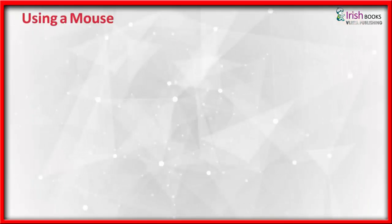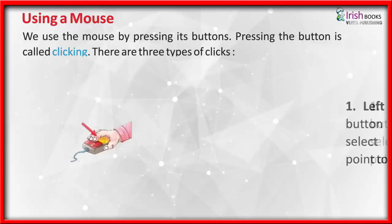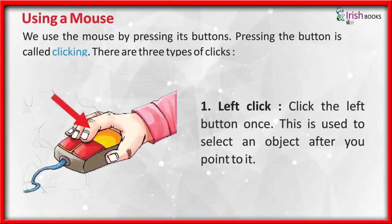Using a mouse: We use the mouse by pressing its buttons. Pressing the button is called clicking. There are three types of clicks. Left click: Click the left button once. This is used to select an object after you point to it.